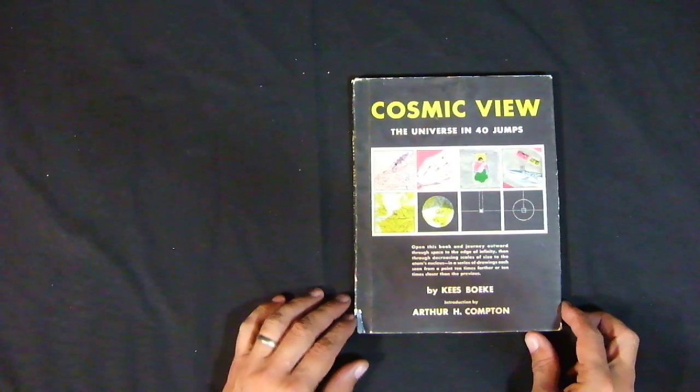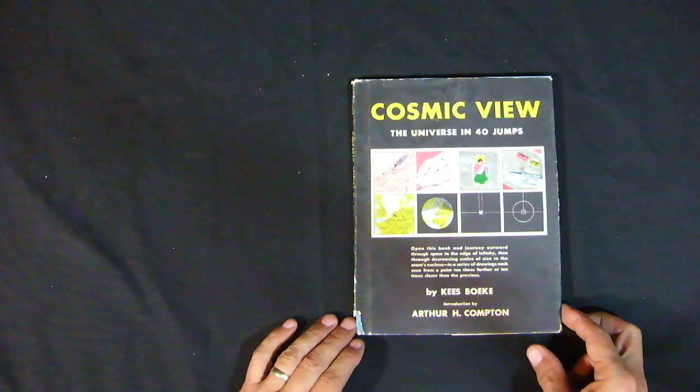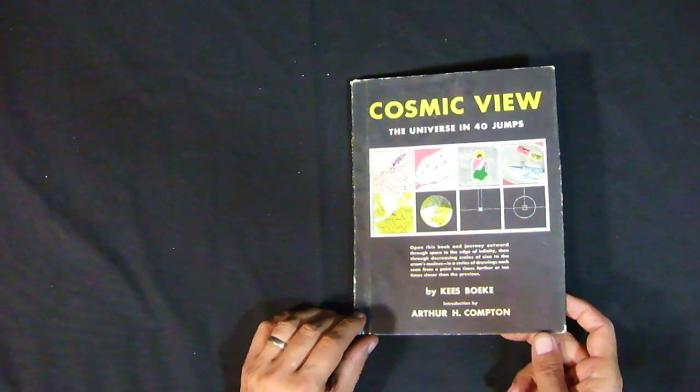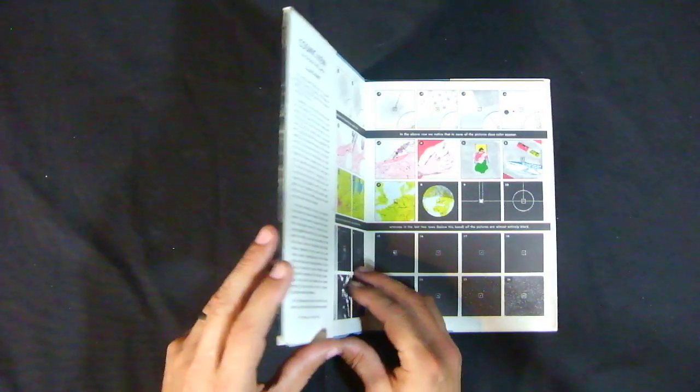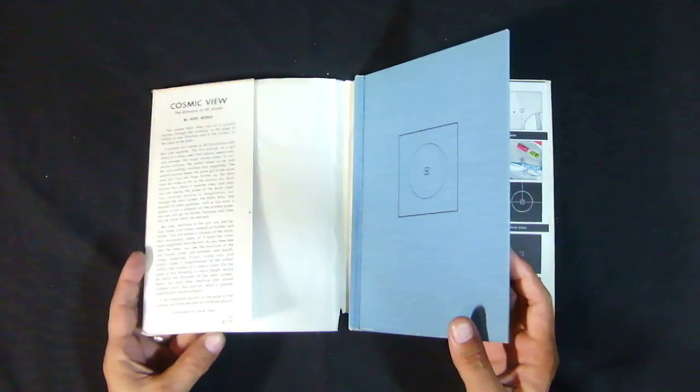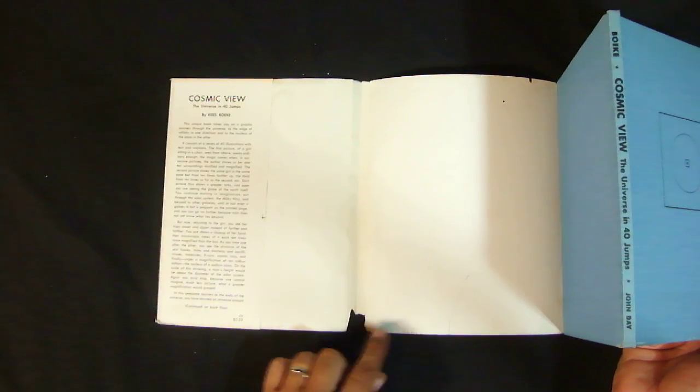Okay, this is the Cosmic View: The Universe in 40 Jumps by Kees Boeke. This book is the first edition, first printing, still has the dust jacket. The dust jacket has a few little rips in it, a little chunk missing.